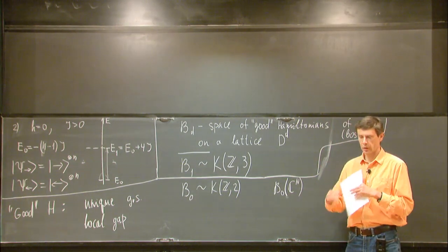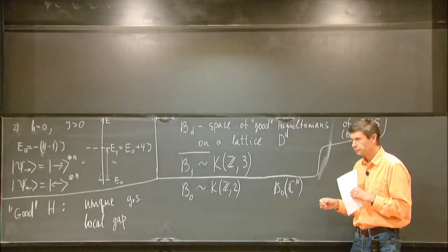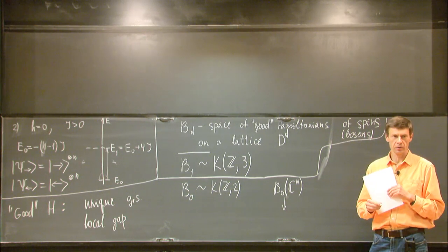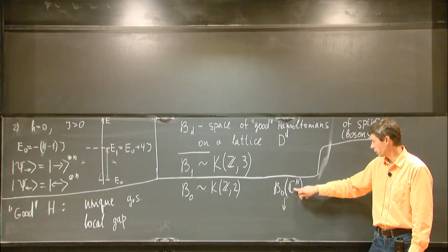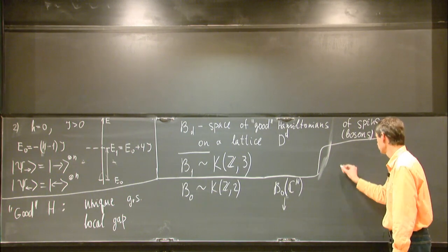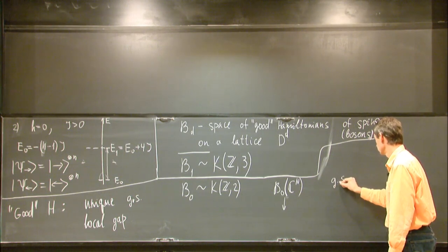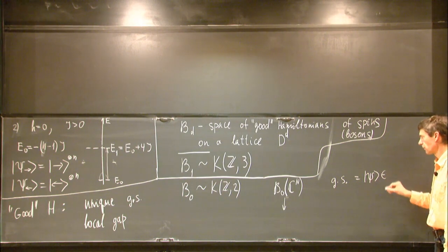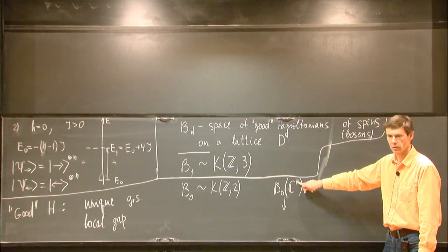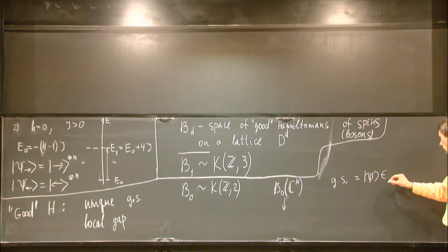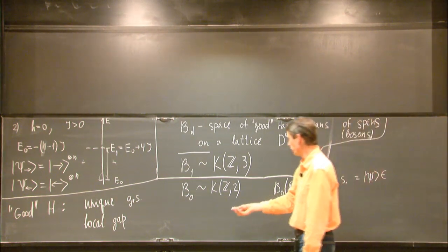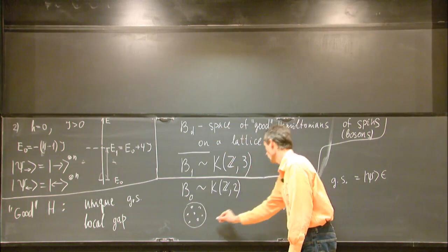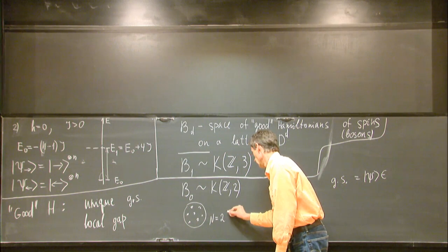Here, it's just a finite-dimensional Hilbert space. And we can say that B0 is the space of Hamiltonians on the Hilbert space C to the capital N. And such Hamiltonians should have an energy gap. The ground state should be separated. Now, one can map the space of Hamiltonians to the space of their ground states. And the ground state is just a vector in C to the N defined up to a phase.